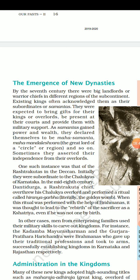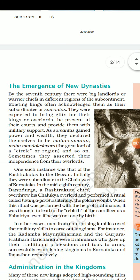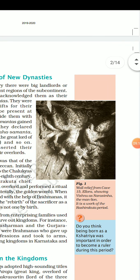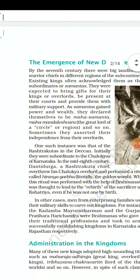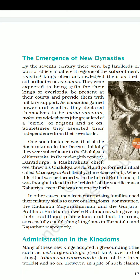As samantas gained power and wealth, they declared themselves to be Mahasamantas or Maha Mandalishwaras. These are very hyperbolic titles. Maha Mandalishwara means 'the great lord of a circular region.' Sometimes they asserted their independence from their overlords — they declared their independence from their king and formed their own dynasty.